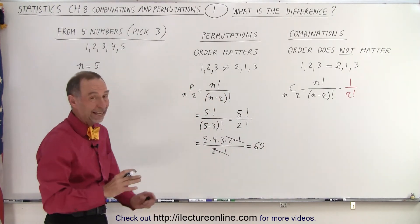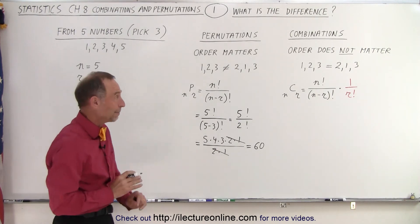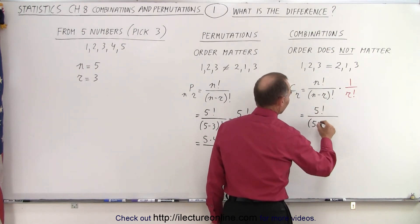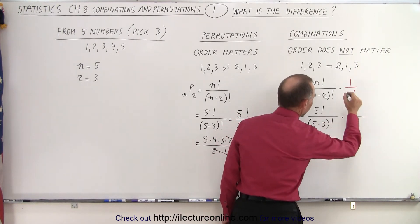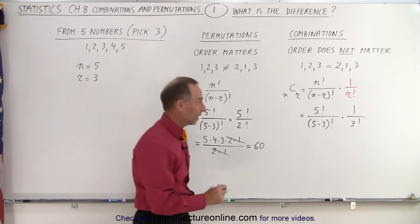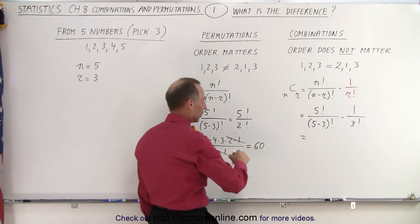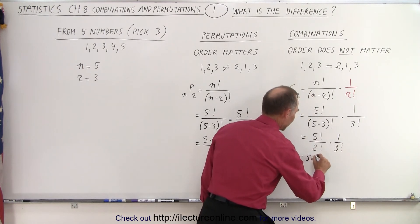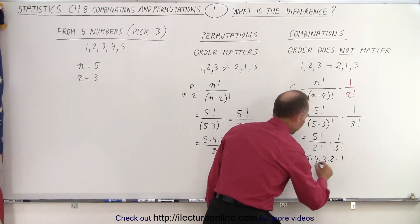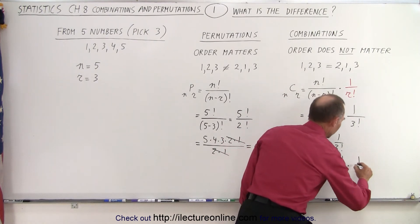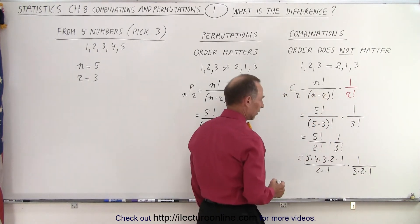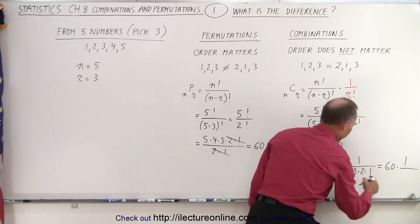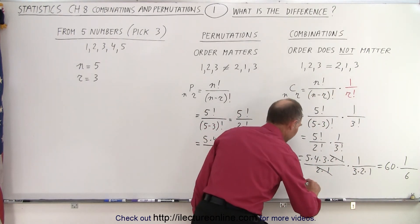Now for the number of combinations — again the same five numbers, I pick any three, but now the order does not matter. So here I end up with N factorial, which is 5 factorial divided by (5 minus 3) factorial, but I now multiply by one over R, which is 3 factorial. That is equal to 5 factorial divided by 2 factorial times 1 over 3 factorial. So that's 5 times 4 times 3 times 2 times 1, divided by 2 times 1, times 1 over 3 times 2 times 1. These cancel out, I still end up with 60 times 1 over 6, so 60 divided by 6, which is equal to 10.